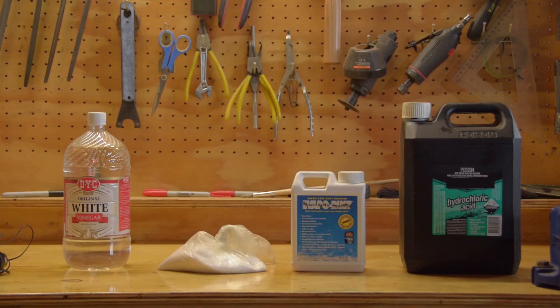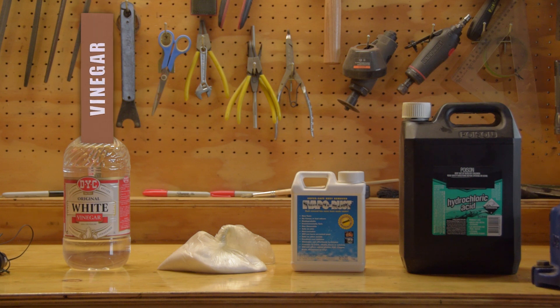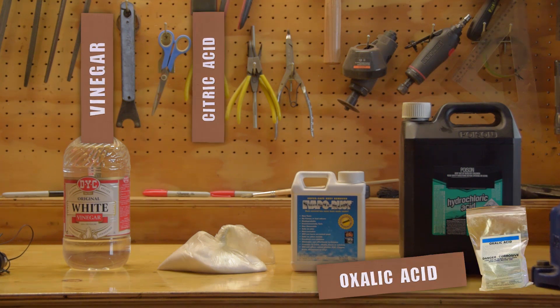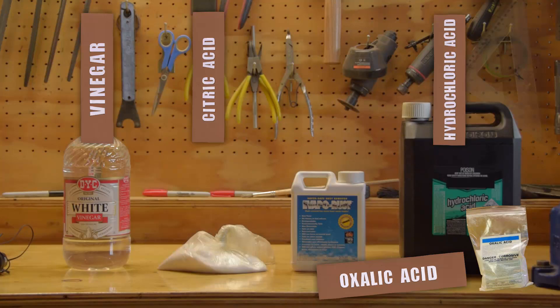Then we have the acids. Vinegar, citric acid, oxalic acid, and hydrochloric acid. Most of the magical rust removal recipes you'll see on the internet are based on products containing one of these acids. All of these acids will remove rust and all of them will corrode steel, but you probably only have to worry about that with hydrochloric acid. For you guys looking for the easy cheap DIY option, I suggest citric acid.